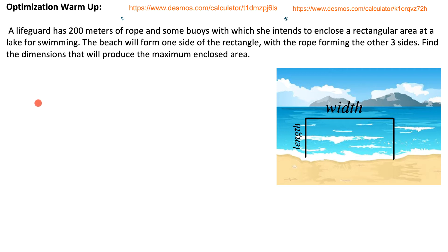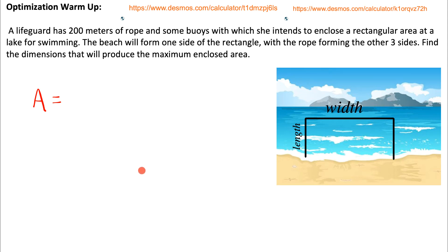We need to start by coming up with an area function for the area of the rectangle drawn here. Importantly, we need an area function that describes the area of a rectangle with these three sides — remember, the beach forms one of the four sides. So we need an area function for a rectangle where those three rope sides can only add up to a length of 200 meters. The area of any rectangle is length times width.